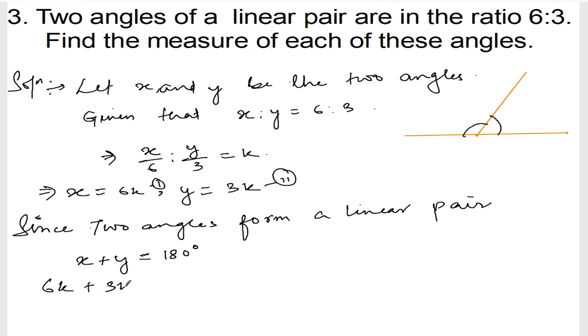x is 6k plus y is 3k is equal to 180. 6k plus 3k is 9k is equal to 180, so k is equal to 180 divided by 9, which is 20.